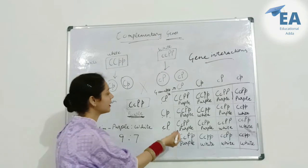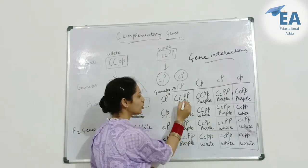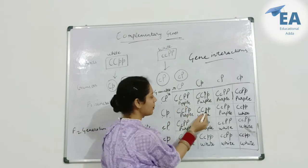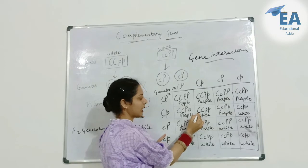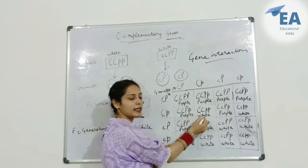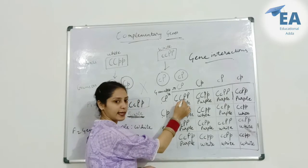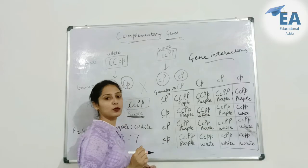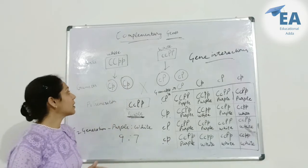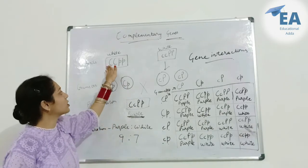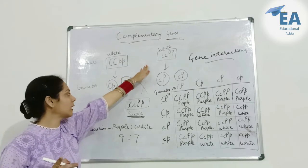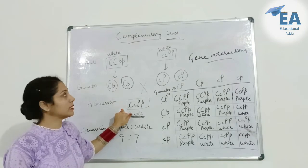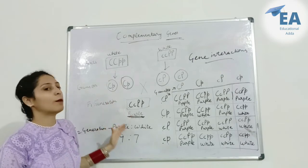You can clearly see that when these two dominant genes C and P are both present together, the flowers are purple. When only one dominant gene is present independently, the flowers are white. So these are complementary genes — they show similar effects independently, but when both are present in dominant form, they show a new trait.